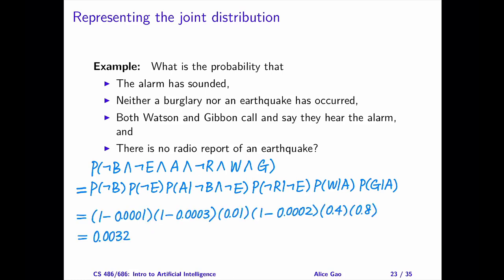Here's the answer. The probability is quite small, which is a good thing. In our story, there are three noisy sensors. Alarm is a sensor for burglary and earthquake. Watson and Gibbon are sensors for alarm, and radio is a sensor for earthquake. If these sensors are somewhat reliable, then the probability of having lots of false alarms should be small.